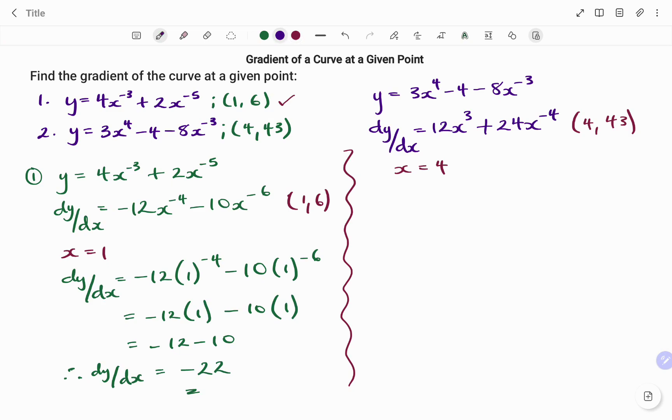So I'm going to replace my x with 4. I have my dy/dx equals 12 times 4 to the power of 3 plus 24 times 4 to the power of negative 4. We have that as 768 plus 3 over 32.